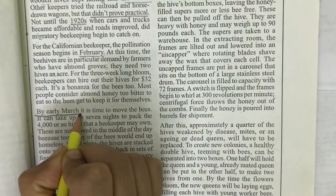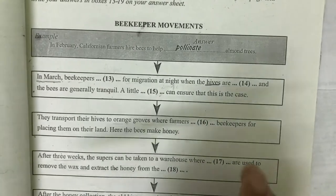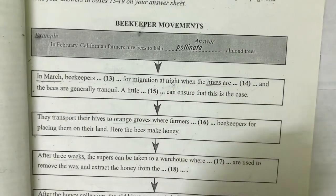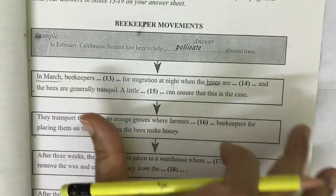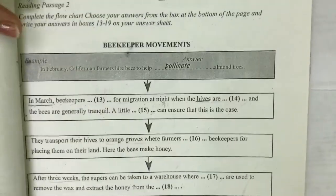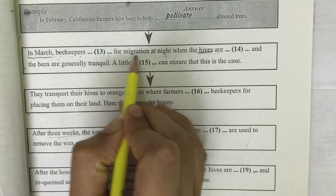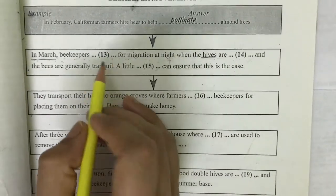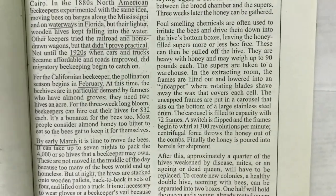By early March — which is a keyword from our question — beekeepers prepare for migration at night. One important thing to remember with fill-in-the-blank questions is that you will not get an exact word from the passage; you need to read both the question and passage carefully and then find the best suitable word from the given options. The question asks: 'In March, beekeepers [blank] for migration at night, when the hives are [blank] and the bees are generally tranquil.'